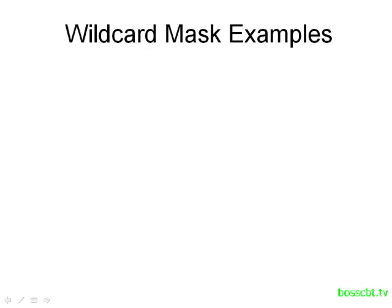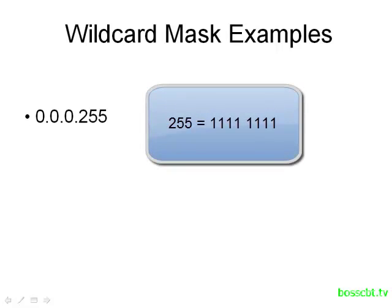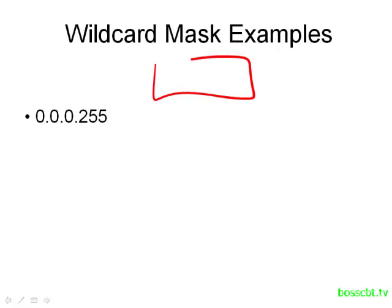Let's take a look at a few examples. In this wildcard mask, we have 0s in the first three octets and then we have all 1s in the last octet. What this means is whatever IP address we're looking at in our packet, the first three octets would have to be an exact match. The last octet could be anything — we don't really care about it because it's all 1s.